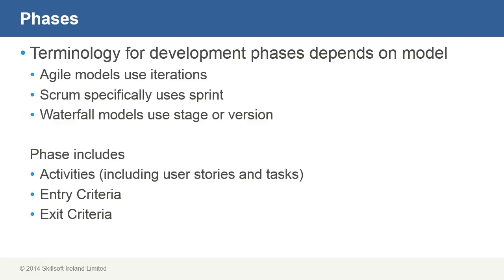In software development, activities are usually defined in terms of entry and exit criteria. Entry criteria can include prior activities, linked tasks, other activities that require completion status, or other important inputs like establishment of available resources. Exit criteria can define things like verified deliverables and successful testing.